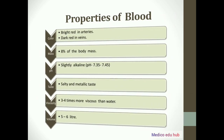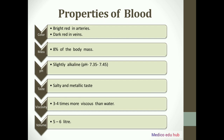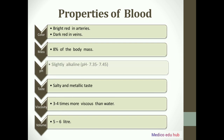In this slide we will study the properties of blood. Number one: blood is red, but arterial blood is bright red and venous blood is dark red. Next is mass — total body mass is 8% blood. Next is pH: the pH of blood is 7.35 to 7.45, which makes blood slightly alkaline.